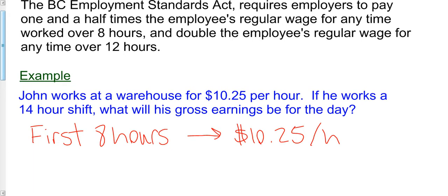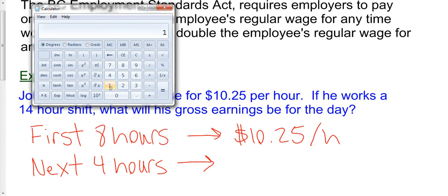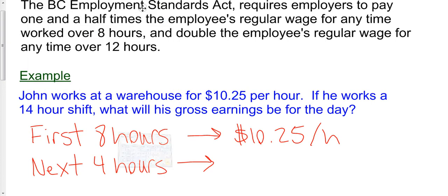So what we're looking at here is the next four hours, that's going to bring us up to that threshold of 12 hours. John's wage is going to be at time and a half. That's $10.25 times 1.5. So $10.25 times 1.5. We'll round that, that's $15.38 an hour.